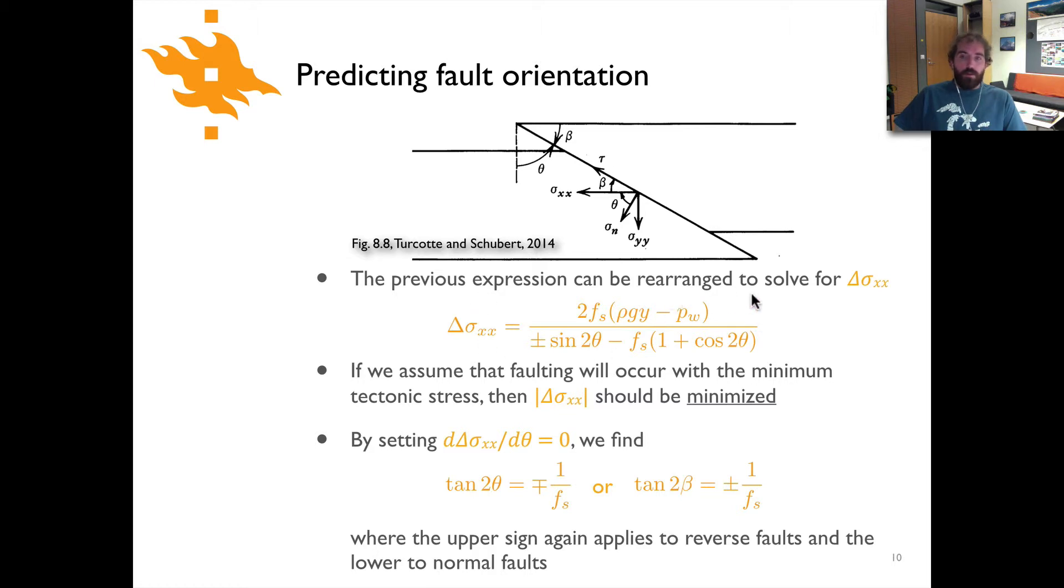If we rearrange that previous expression we can basically solve for delta sigma xx and you end up with something that looks like this. There's not really any need to walk through this equation it's simply just rearranging the terms to solve for delta sigma xx at which point we can make an assumption and that is that faulting is going to occur when the tectonic stress is minimized. And so the absolute magnitude then of this term should be minimized in order to calculate the conditions under which we expect faulting to occur. And you can do that by taking the derivative of this relationship here with respect to theta. If you take the derivative of this and set it equal to zero that is a way to find the minimum value.